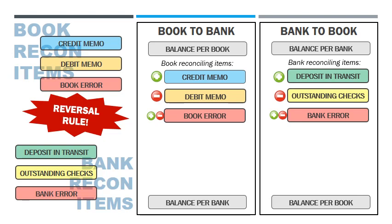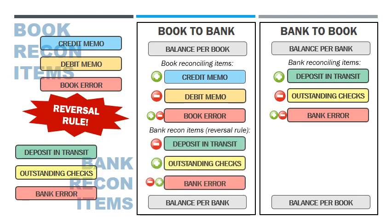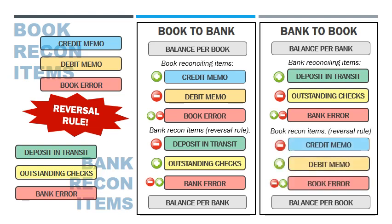When we compute using book to bank, the signs of the bank reconciling items will be reversed. Likewise, when we compute using bank to book, the book reconciling items will be reversed.